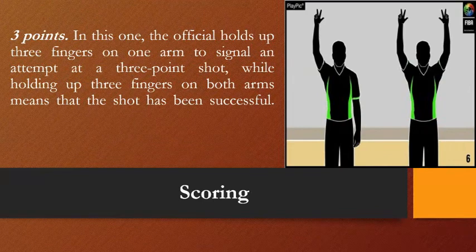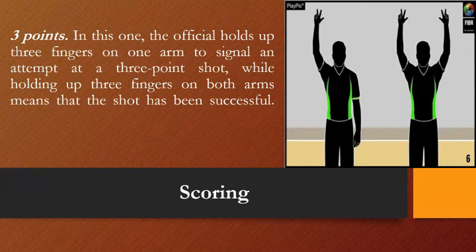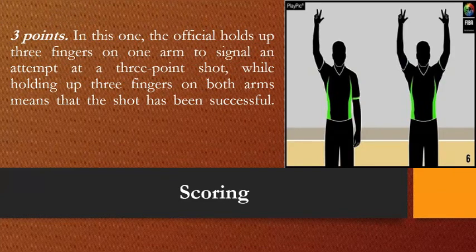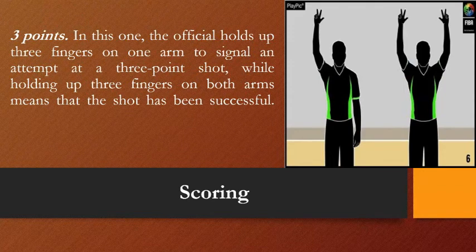There are two referees. The lead referee positions himself under the basket or under the goal, while the trail referee positions himself beyond the three-point shot area. It is the responsibility of the trail referee to raise one hand if there is an attempt at the three-point shot. If the basket is counted and successful, the referee immediately raises both hands.